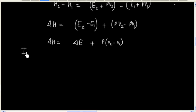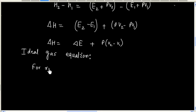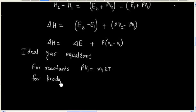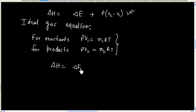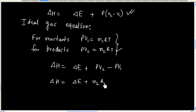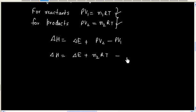We can apply the ideal gas equation for reactants and products. For reactants: PV1 = N1RT, and for products: PV2 = N2RT. We can plug these two values into the expression: ΔH = ΔE + PV2 − PV1, where PV2 = N2RT and PV1 = N1RT.